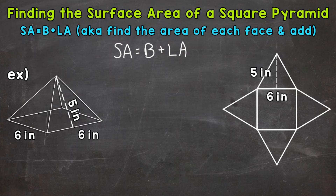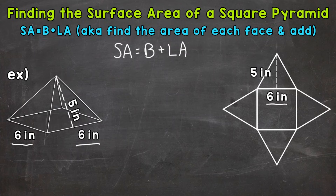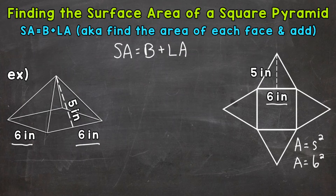That's going to get us started. Then we'll plug in our information. Let's use the net on the right of the screen to help us — you can think of a net as an unfolded 3D shape that shows us all of the parts. We're going to start with the area of the base. For this square pyramid, the base is six inches by six inches. To calculate the area of a square, we do one of the sides squared: six squared is six times six, so the area of the base is 36 square inches.